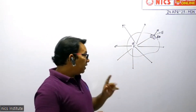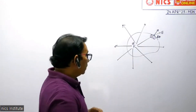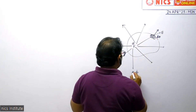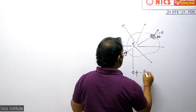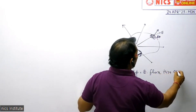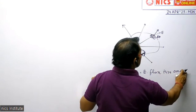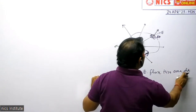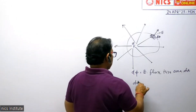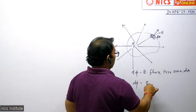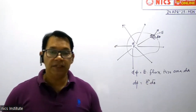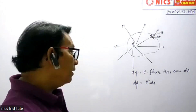So if I have to find the flux from the Gaussian surface — dΦ — what is dΦ? dΦ is the electric flux through a small area DA. We can find dΦ as E dot DA. Electric flux by definition is the dot product of the electric field and the area.